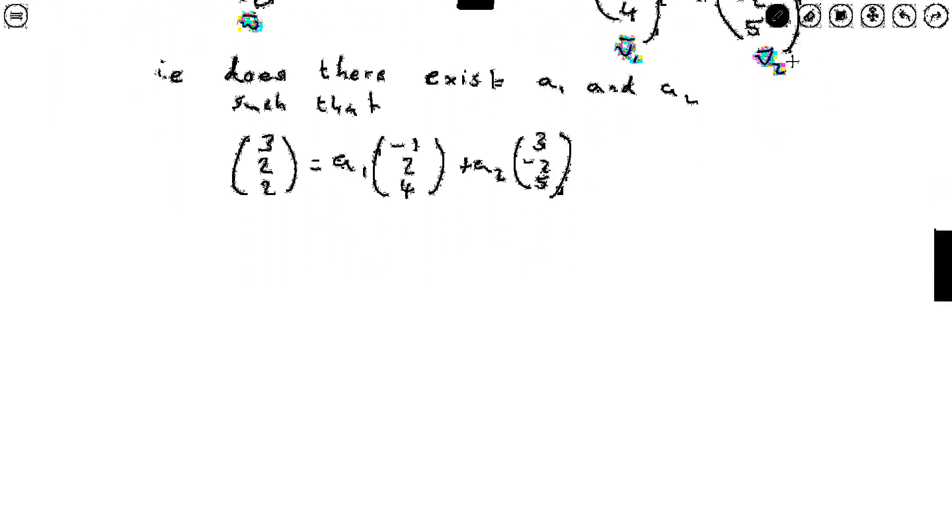Or by using what we know about adding and scaling vectors, this becomes, this right hand side is actually equal to (-a1 + 3a2, 2a1 - 2a2, 4a1 + 5a2) is the first component of the vector of these two combined.